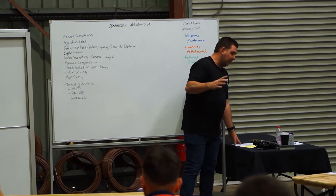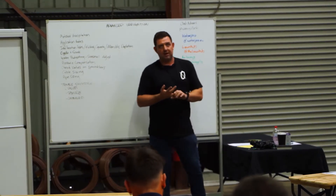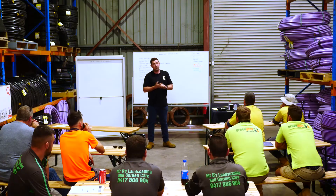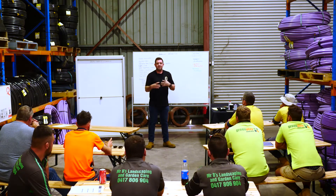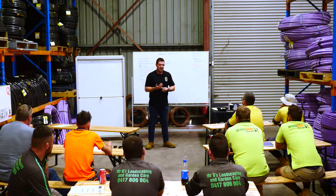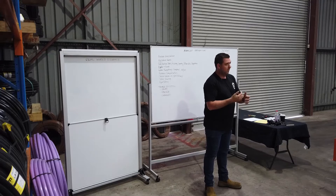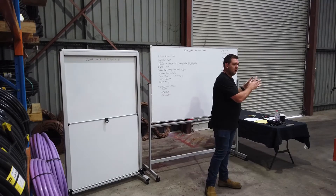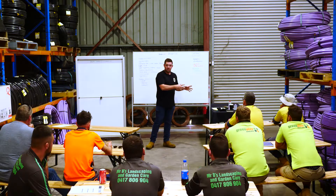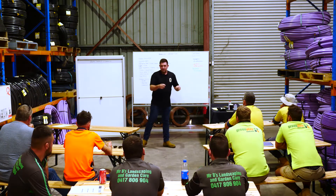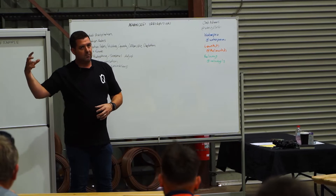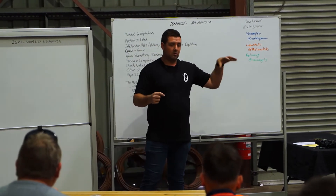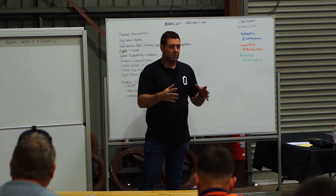Products like the MP rotator, the Rainbird R-Van, and I think the Rainbird 5000 have a match precipitation nozzle. They can realistically be designed in any configuration and they'll generally match. Obviously the 800 SR and the 3500s for the MPs won't necessarily match with the ones, twos, and threes. Then you move to the R-Vans, which match with each other, and you can use the 5000 match precipitation nozzles with R-Vans and get match precipitation.